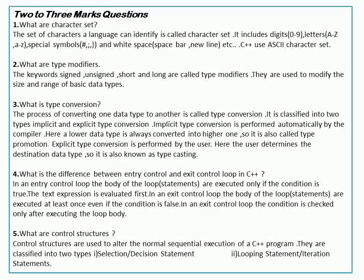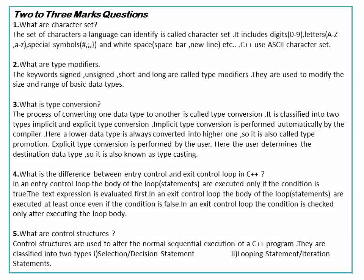What are character sets? A character set is the set of characters used in a programming language. Type modifiers in C++ are called signed, unsigned, long, and short. Basic data types have a defined size and range. Type conversion can be implicit or explicit. Implicit conversion is called type promotion and explicit conversion is called type casting.